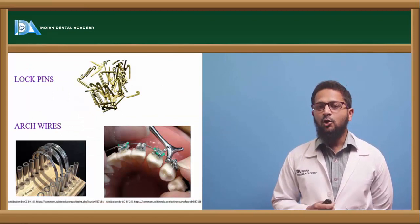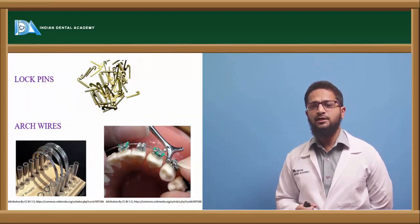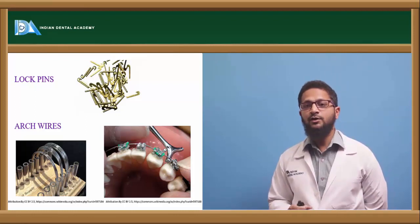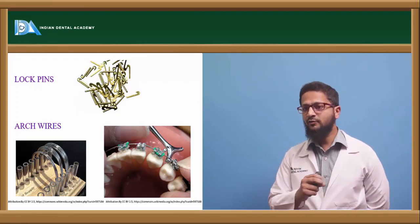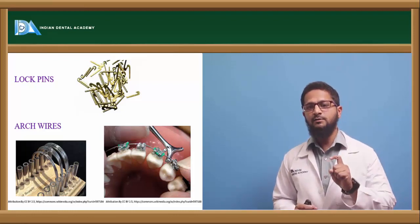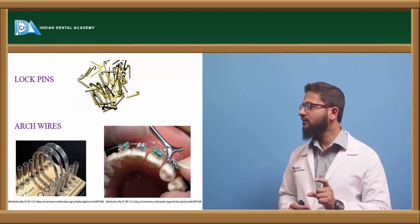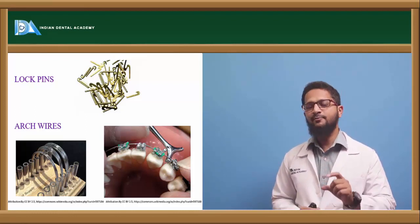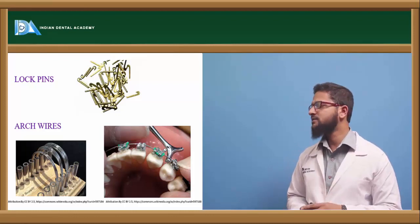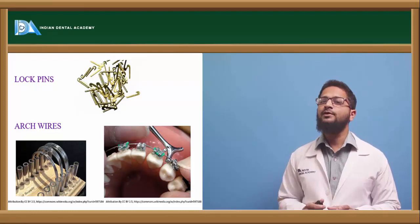Lock pins are usually made of brass and are most commonly used in the Begg appliance technique, which uses ribbon arch brackets. After placement of the round arch wire in the ribbon arch brackets, the arch wire must be properly secured and positioned. Lock pins serve this purpose — helping in proper engagement of the arch wire into the bracket slot. They are most commonly used in the Begg appliance technique.